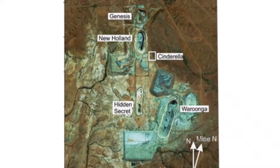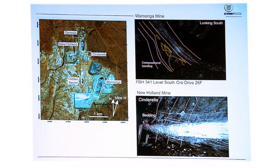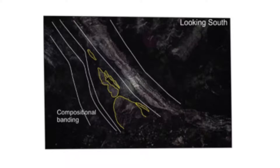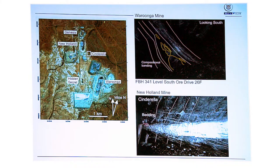The Wurrunga deposit and New Holland are only two kilometres apart and at the same elevation, but structurally they are so different. At Wurrunga it's all layer-parallel shears, very ductile—you see boudinage porphyry bodies right beside the shears. You go across to New Holland and instead you have flat, brittle lodes cutting across vertical beds. It's basically chalk and cheese.